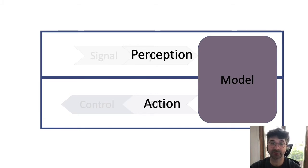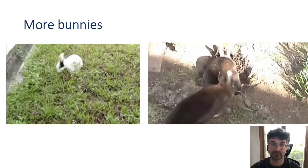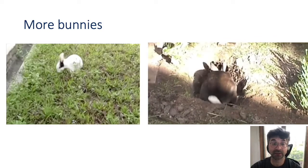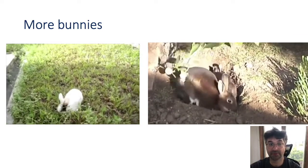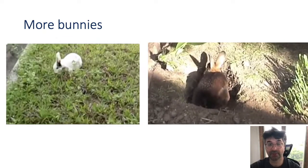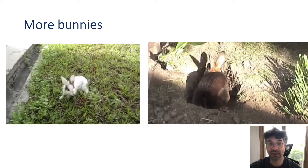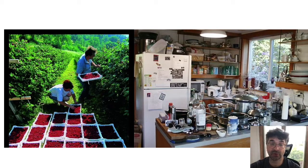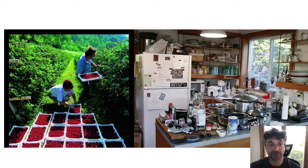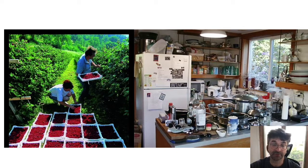You might also be surprised to hear that this approach is nowhere close to modeling what actual rabbits are capable of. To survive, rabbits must operate in a very complex world — representing complicated settings, dealing with predators, searching for food even when they can't see it, and performing very complex actions. If you want to design robots that can pick raspberries on a small farm or operate in messy homes, we need to push the limits of what such models can do at the interface of perception and action.